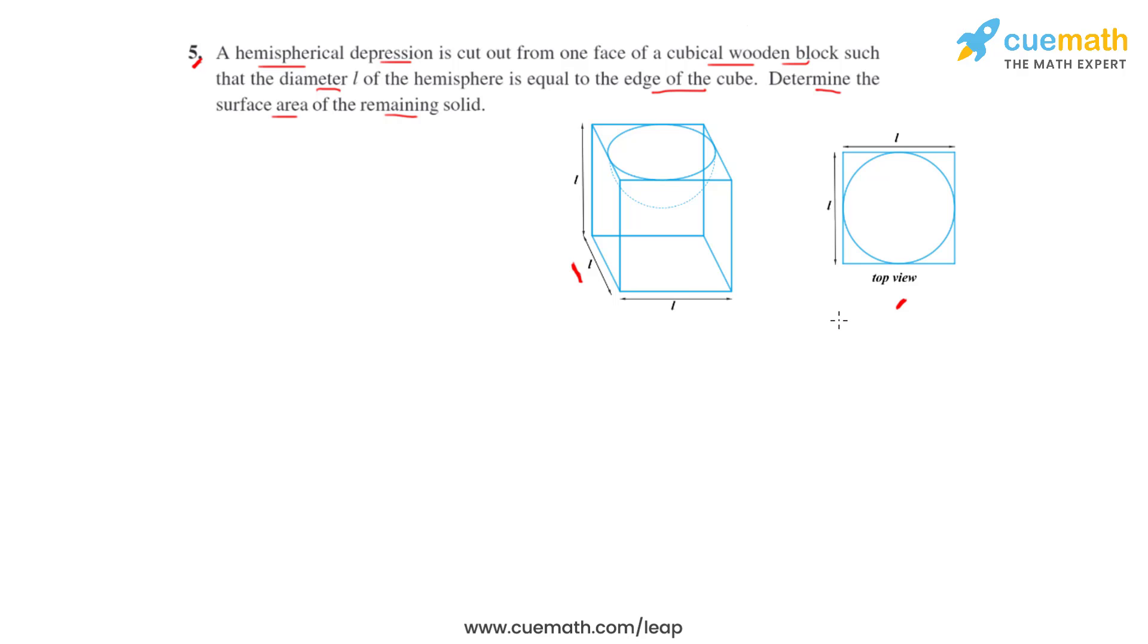So what they have actually done is they had taken a cube of side length L and they have scooped out a hemisphere from the top face which is having a diameter equal to L, that is the side length of the cubical block.